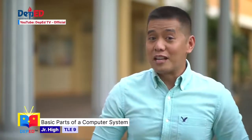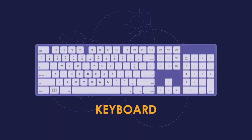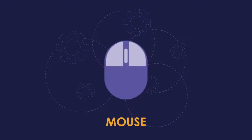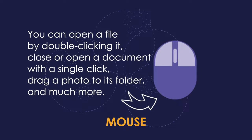What do you use if you want to message your friends on social media? You use a keyboard. The keyboard is the most commonly used input device and is divided into four parts: alphanumeric, function keys, control keys, and numeric keys. In our future episodes, we will be discussing more of the keyboard and I will also give you some tips on how to practice and type without looking at the keyboard. Next, we have a mouse. A computer mouse is a pointing device that lets you point to objects on the screen, select, open a program, click on a folder, scroll, and move files around. What's good about the mouse is it gives the user more freedom to move your cursor in any direction on the monitor. You can open a file by double-clicking it, close or open a document with a single click, drag a photo to its folder, and much more. The mouse just made the computer much easier to use.